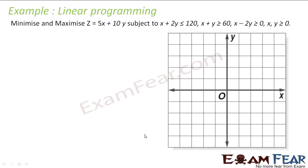Here we have to find the maxima and minima of Z = 5x + 10y. The conditions are as follows: x + 2y is less than 120, x + y is less than 60, and x - 2y is greater than 0.